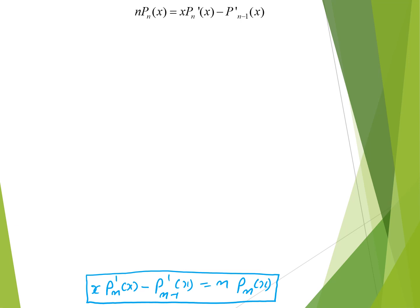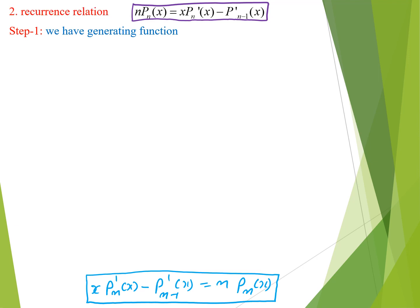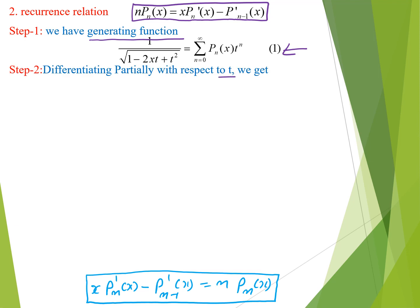Now we are going to prove the second recurrence relation: n P_n(x) = x P_n'(x) minus P_{n-1}'(x). To prove it, we again require the generating function — equation 1. We differentiate equation 1 with respect to t to get equation 2, and now we partially differentiate equation 1 with respect to x.